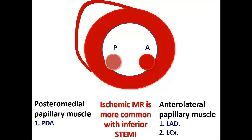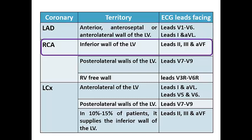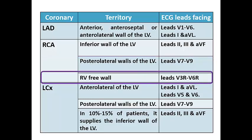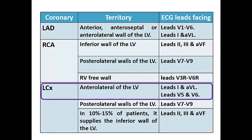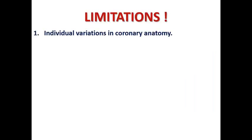As a conclusion of coronary perfusion: the LAD supplies the anterior and anteroseptal wall (V1–V6) and anterolateral wall (leads I, aVL, V5–V6). The RCA supplies the inferior wall (leads II, III, aVF), posterolateral wall (posterior ECG leads V7–V9), and RV wall (right ECG leads V3R–V6R, most importantly V3R and V4R). The LCX supplies the anterolateral wall (leads I, aVL, V5–V6), posterolateral wall (V7–V9), and in 10–15% when dominant, the inferior wall (leads II, III, aVF).